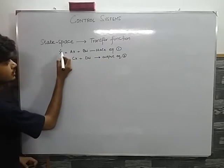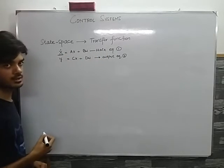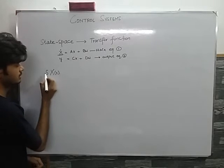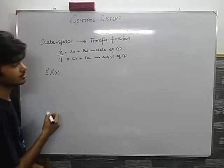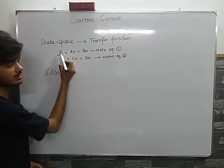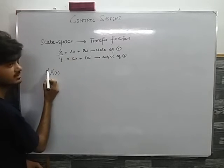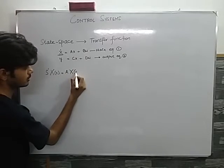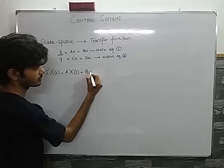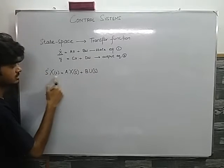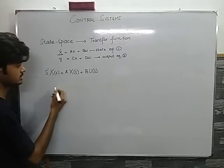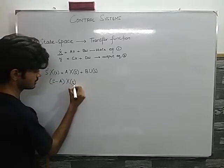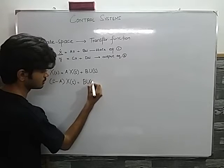To proceed, I am going to take the Laplace transform of equation number one. We know that the Laplace transform of the derivative term equals s into capital X(s). This s is raised to the power one because I have a first derivative here; if I had a second derivative I would write s-squared into X(s). This gives us: s·X(s) equals A·X(s) plus B·U(s). Combining both X(s) terms, I get (s minus A)·X(s) equals B·U(s).